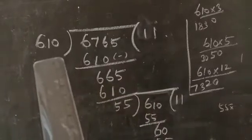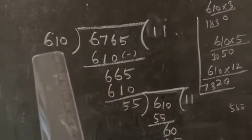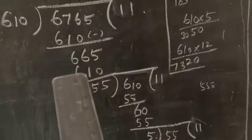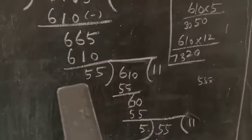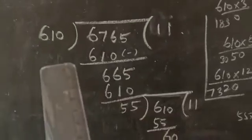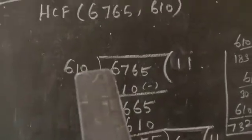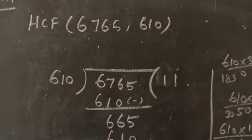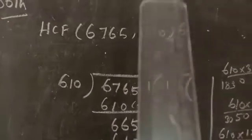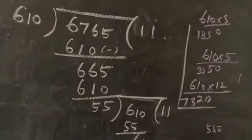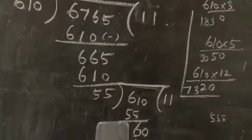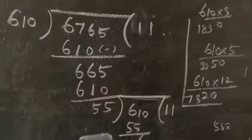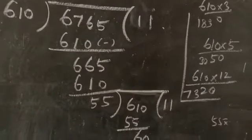Again, 1 into 610 is equal to 610. Then we subtract the two numbers, we get 55. In second division, 55 is a divisor and 610 is a dividend, isn't it? In first division, the large number 6765 is a dividend and the small number 610 is a divisor. And in this division, we get the remainder 55. We get the remainder 55. That remainder is considered to be a divisor here.